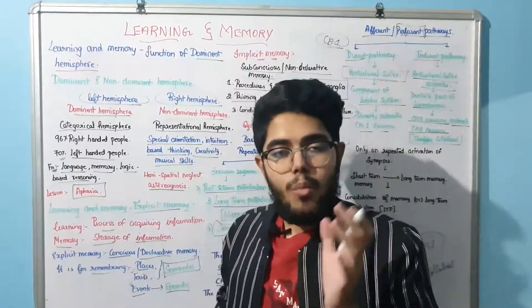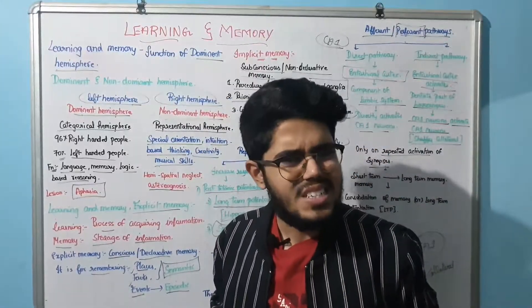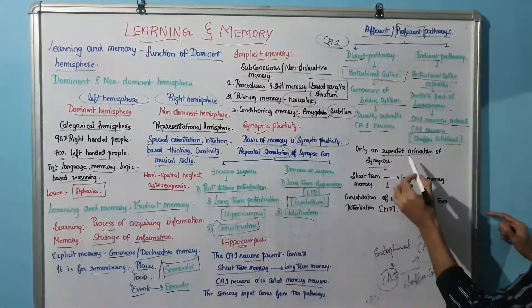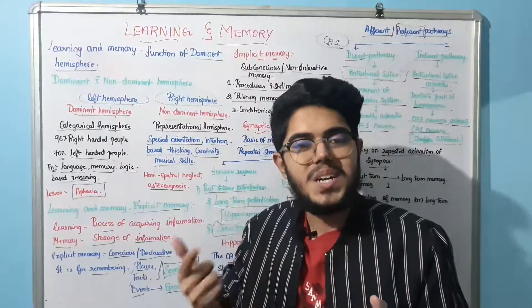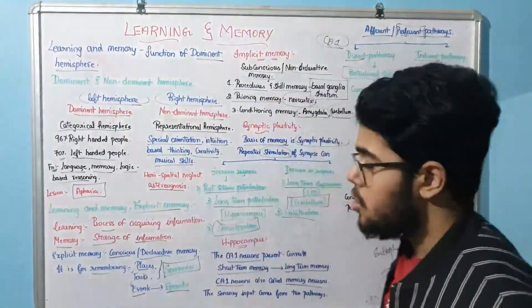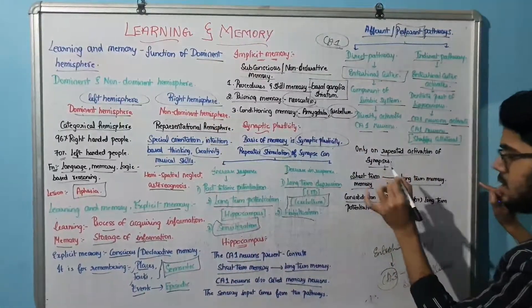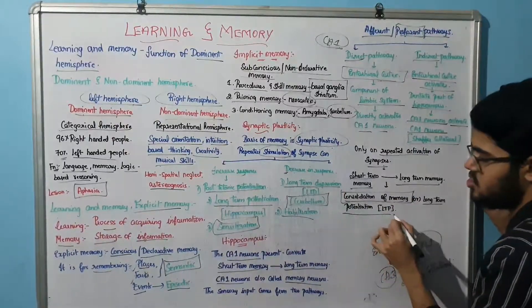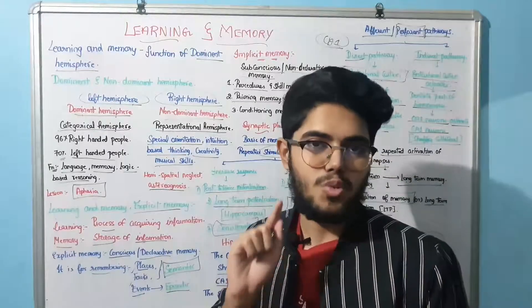We have two hemispheres: the dominant hemisphere, also called the categorical hemisphere, and the non-dominant hemisphere, also called the representational hemisphere. 96% of right-handed people have a dominant left hemisphere, and 70% of left-handed people also have the dominant hemisphere.